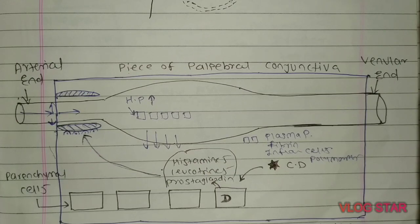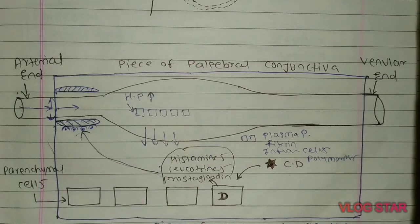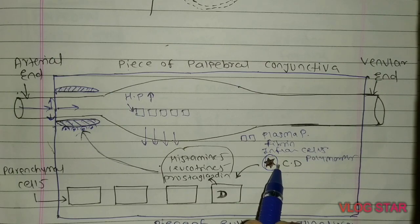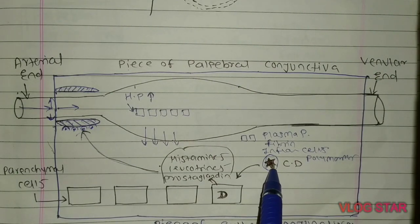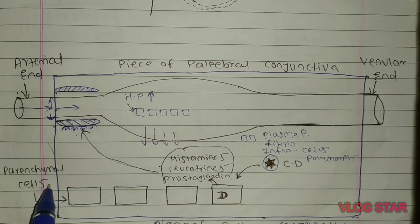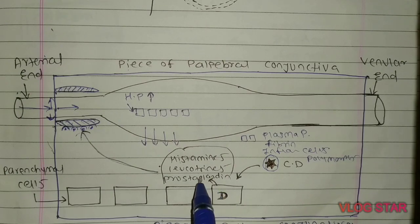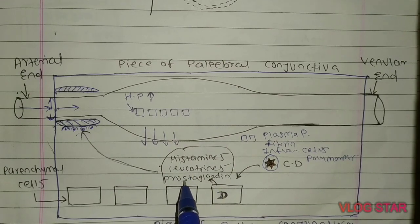The pathogenesis is the same as for membranous conjunctivitis. The main causative organism — the Klebs-Löffler bacillus — enters the palpebral conjunctiva and damages the parenchymal cells. Once these parenchymal cells are damaged, they release histamine, leukotriene, prostaglandin, and other chemical mediators.